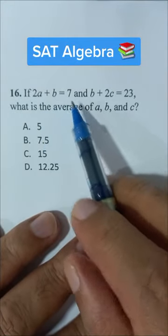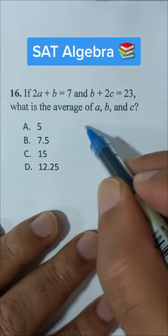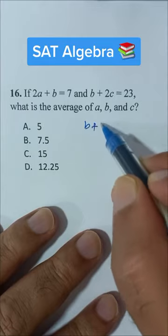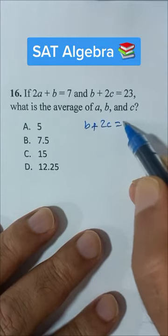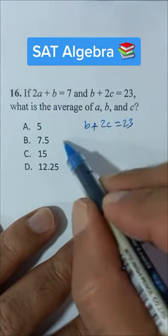If 2a plus b equals 7 and b plus 2c equals 23, let's write it here. 2a plus b equals 7.